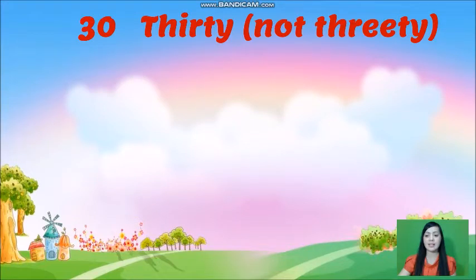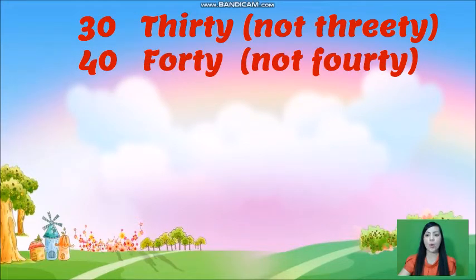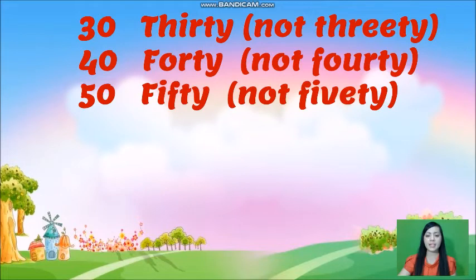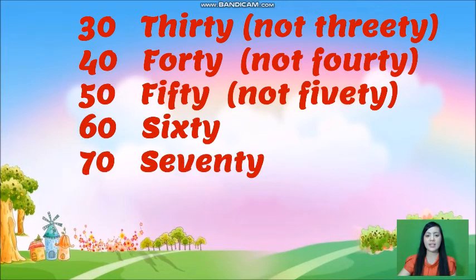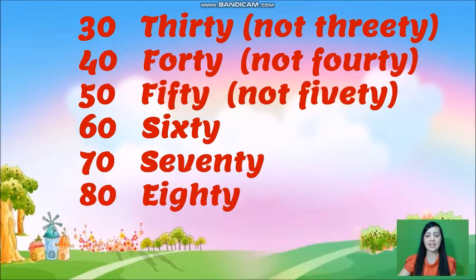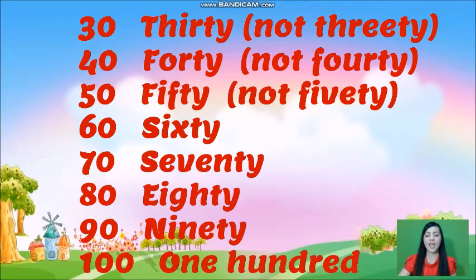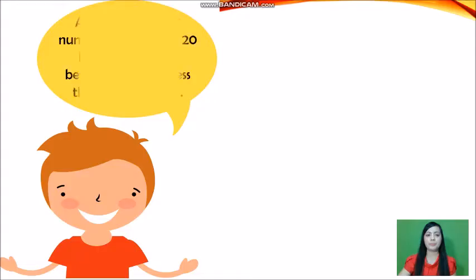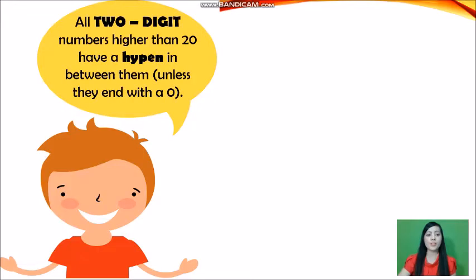Next we have 30, not 3t; 40, not 4t; 50, not 5t; 60, 70, 80, 90, and 100. All two-digit numbers higher than 20 have a hyphen or dash in between them, unless they end with a zero.